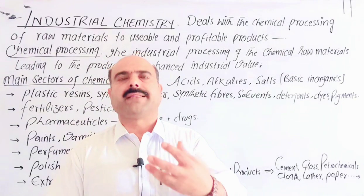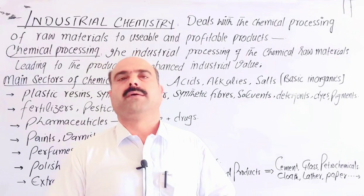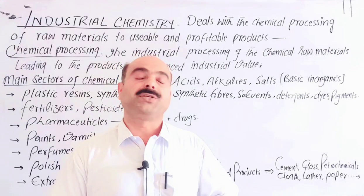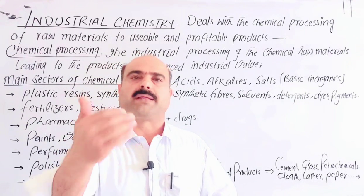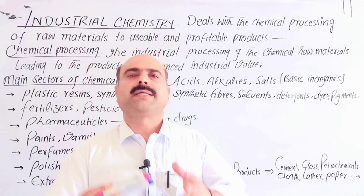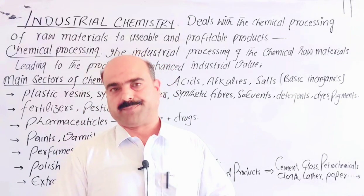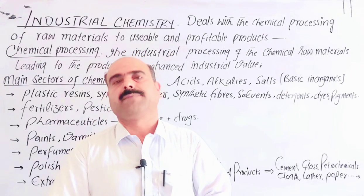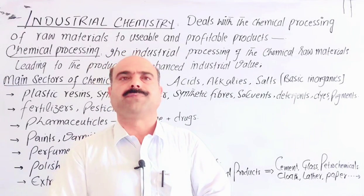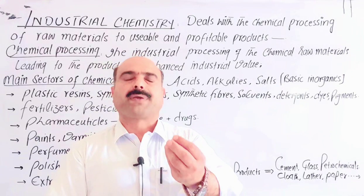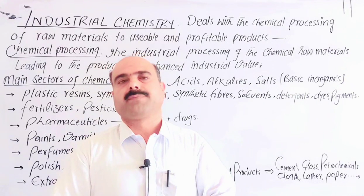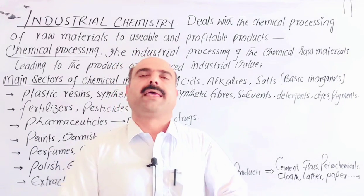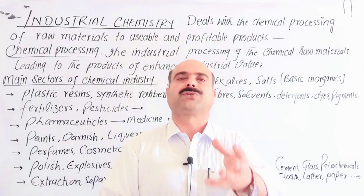In the definition, we said that industrial chemistry deals with the chemical processing of raw materials in order to form usable and profitable materials. What is chemical processing? Chemical processing is the industrial processing that occurs in industry. It is carried out in industry — the chemical processing of raw materials — which leads to products of enhanced industrial value.